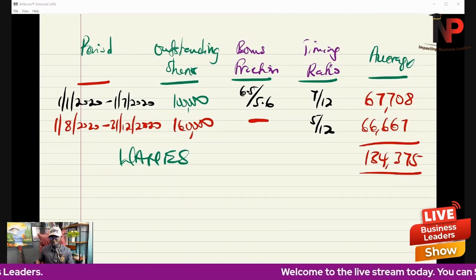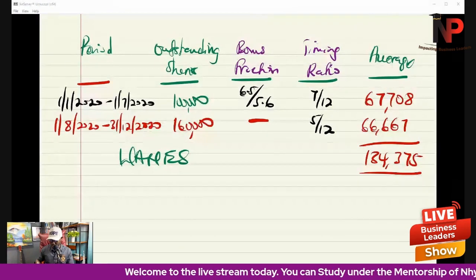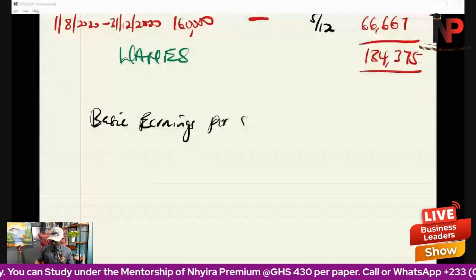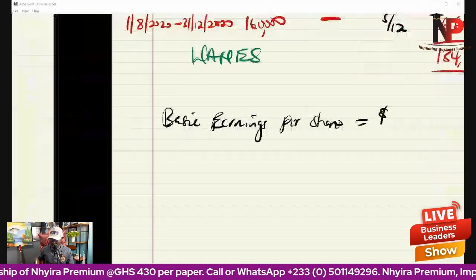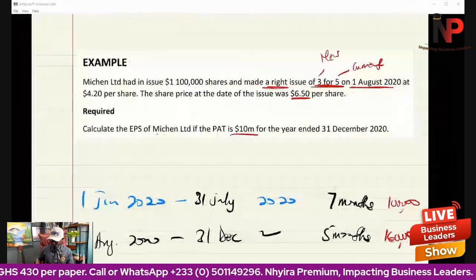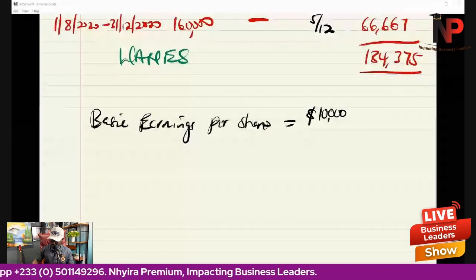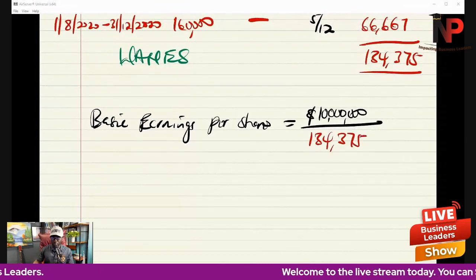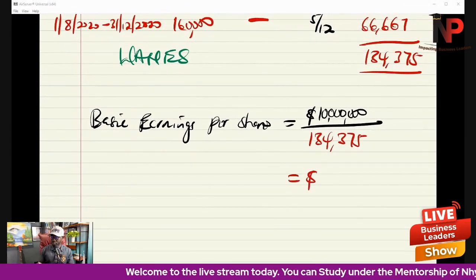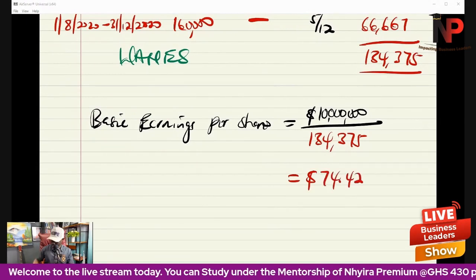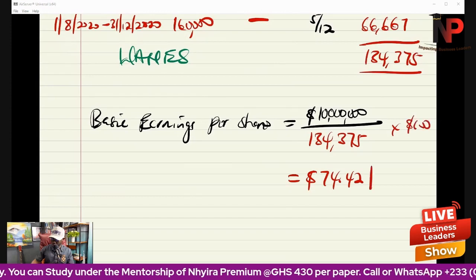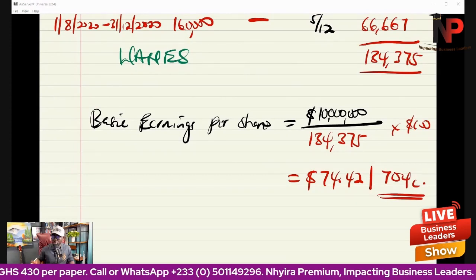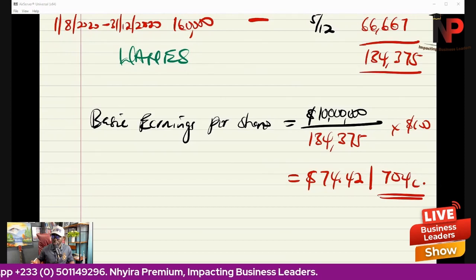Now we can calculate the basic earnings per share. The basic EPS equals profit after tax of $10,000,000 divided by the weighted average number of equity shares of 134,375, giving us approximately $74.42 per share, or $0.744 in cents terms. This is how we deal with calculation of earnings per share when we have right issues.